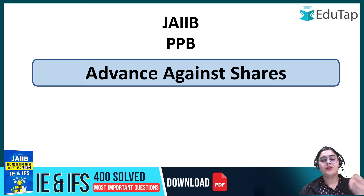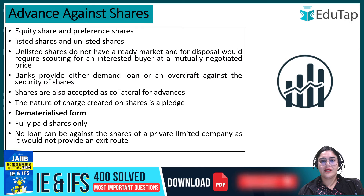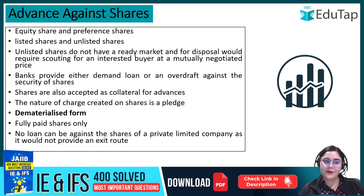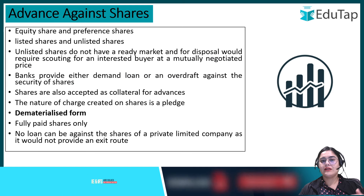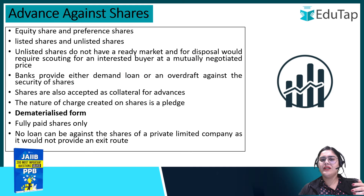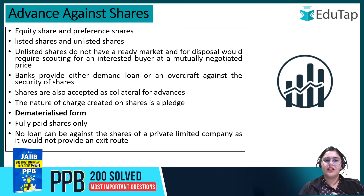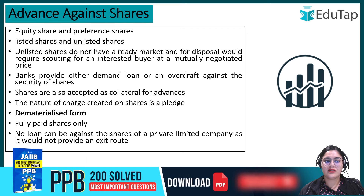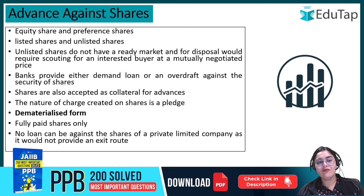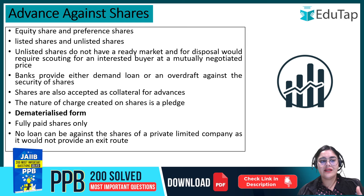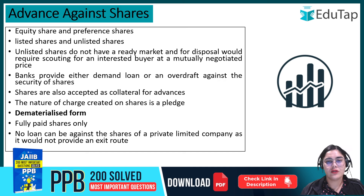When banks give a loan, they need some kind of security. You can get a loan from your house, your car, jewelry, and in the same way, you can get an advance against shares also.